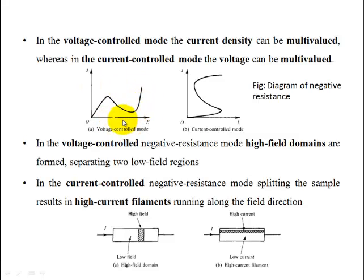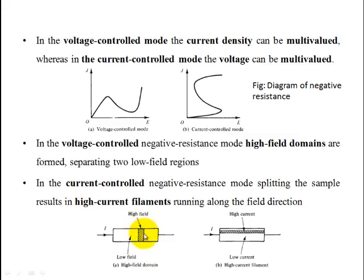In the voltage-controlled mode, we plot current density J versus electric field E — the Gunn effect I-V characteristic. In voltage-controlled mode, a single voltage corresponds to multiple values of current density. Whereas in current-controlled mode, a single current corresponds to multiple voltage values. In the voltage-controlled device, a high-field domain forms; in the current-controlled device, a current filament forms along the field direction.